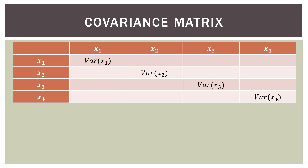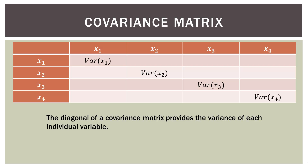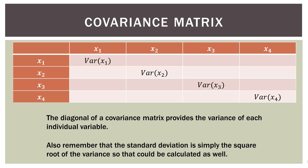Just to make that clearer: in the covariance matrix, the variances go along the diagonal — that's each variable's covariance with itself, which is the same as the variance. Also remember that the standard deviation is simply the square root of the variance, so based on this covariance matrix, you can actually calculate the standard deviation as well. Sometimes, just to save time, you can run a covariance matrix and derive other information from it. The standard deviation is the square root of the variance, so you can get it directly from this chart.